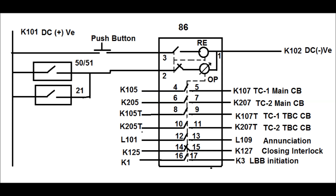In this figure, the operating coil of the master trip relay has been shown by OP and the resetting coil has been shown by RE. There is an NC contact in series with the operating coil. It is placed so that as soon as the operating coil operates, the NC contact changes state, thereby preventing continuous DC positive from reaching the operating coil so that the relay coil cannot burn out.